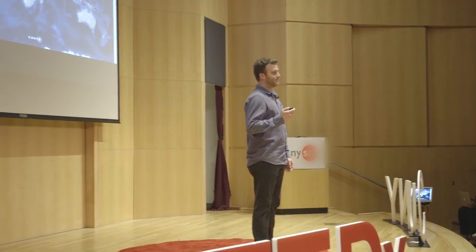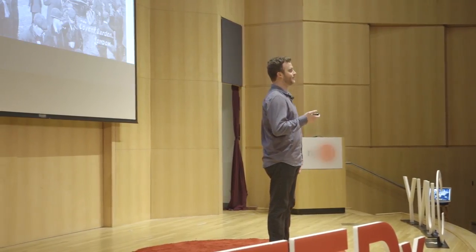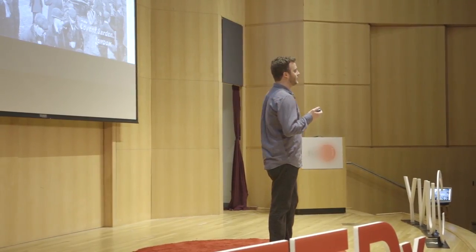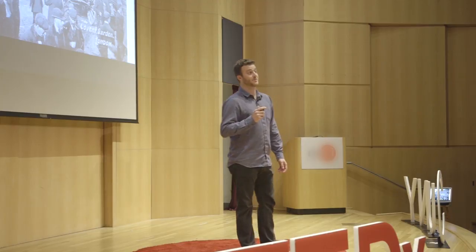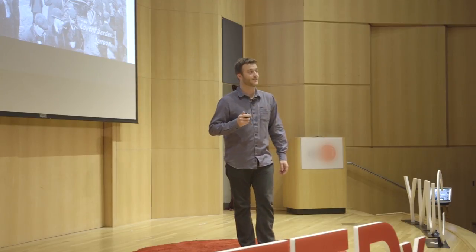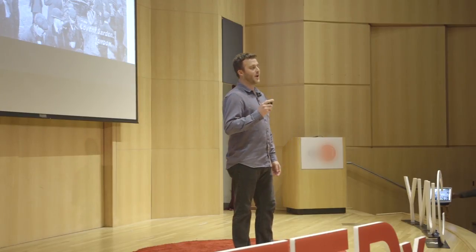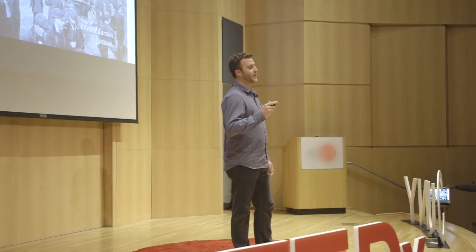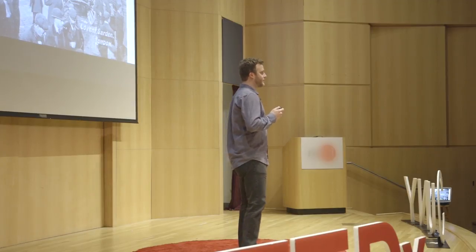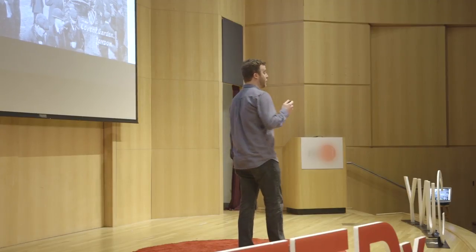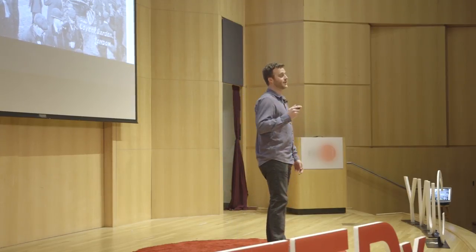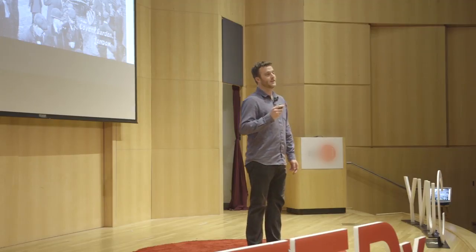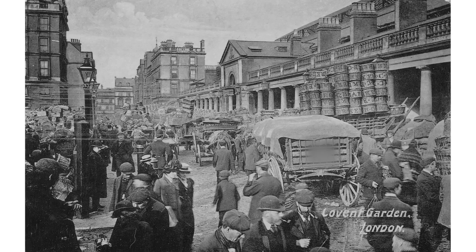Let's take a little trip. Nineteenth century London was not an easy place to live. Much of the population found themselves living in abject poverty, in overcrowded slums, with horrendous sanitation. The average life expectancy was less than 50 years.